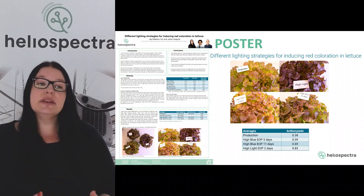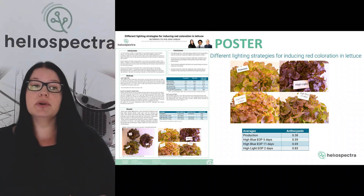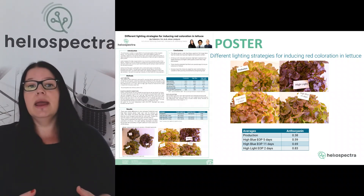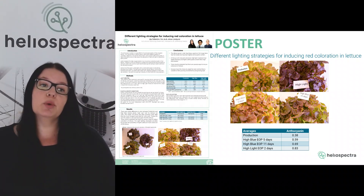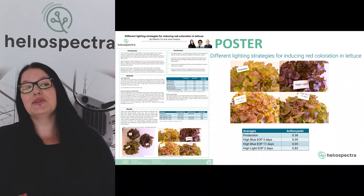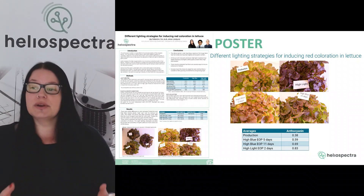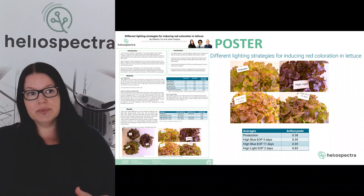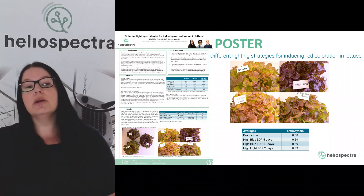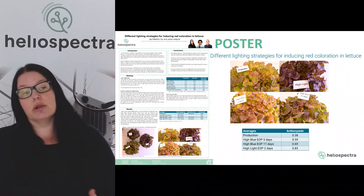Looking at anthocyanin content, we can see quite big visual differences in the photos. The production light gave the least coloration, while the high light treatment for two days gave the most intense coloration visually. Looking at measured anthocyanin concentration, production had the lowest, while the high light treatment had the highest. For the high blue treatment, the shorter the period, the less coloration; the longer the period, the more coloration the crop had.